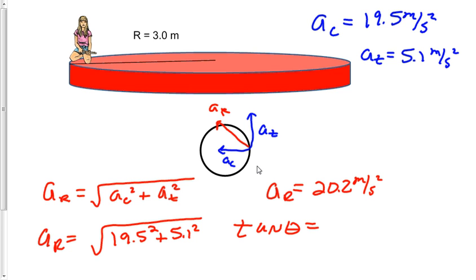Let's do it from where I've drawn it. That equals tangential acceleration over centripetal acceleration, so 5.1 over 19.5.